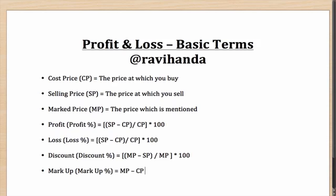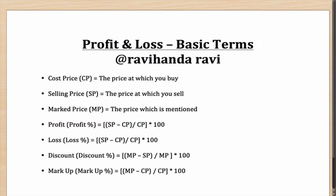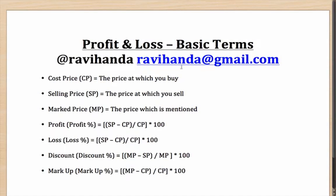Continuing the book example: you purchase the book at 120, the price mentioned was 200, and the cost price was 100 rupees — so the markup was 200 minus 100, or 100 rupees. The markup percentage is calculated on the cost price, similar to profit and loss. So to summarize, the absolute markup is the difference between the mark price and the cost price. Please provide feedback via Twitter or via email at ravihanda@gmail.com. Thank you.